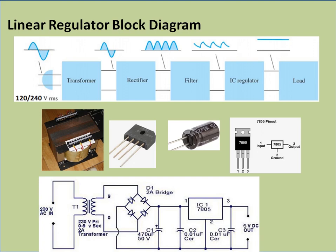In the linear regulator block diagram, the incoming AC power supply is converted to DC by using a transformer and rectifier, then filtered to remove unwanted ripple, then fed to a regulator, and finally to the load. The transformer is bulky because it operates at 50 Hz, making it large — this is one reason for the increased weight of a linear power supply. The filter components are also bulky because they operate at 50 or 60 Hz.